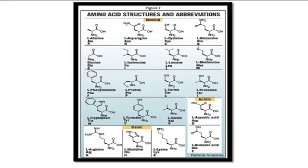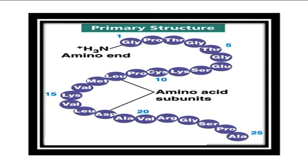Each amino acid has both a one-letter and three-letter abbreviation. These abbreviations are commonly used to simplify the written sequence of a peptide or protein. The amino acid sequence of a protein is encoded in DNA. Proteins are synthesized by a series of steps called transcription — the use of a DNA strand to make a complementary messenger RNA (mRNA) strand — and translation, where the mRNA sequence is used as a template to guide the synthesis of the chain of amino acids which make up the protein. While the amino acid sequence makes up the primary structure of the protein, the chemical or biological properties of the protein are dependent on the three-dimensional or tertiary structure.